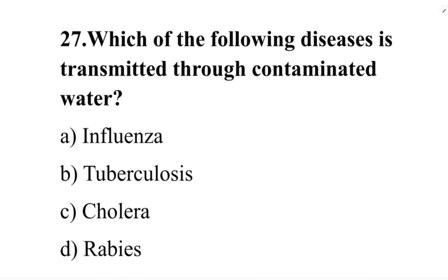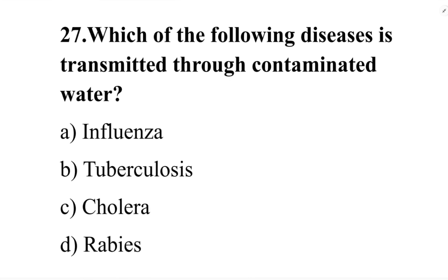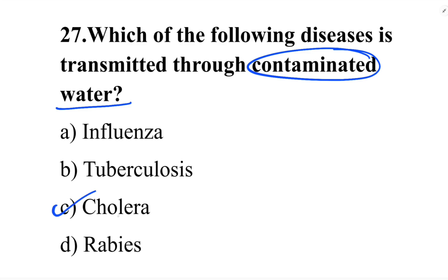Next question: which of the following diseases is transmitted through contaminated water? Option A: influenza. Option B: tuberculosis. Option C: cholera. Option D: rabies. The correct answer is option C, cholera. Cholera is transmitted through contaminated water.